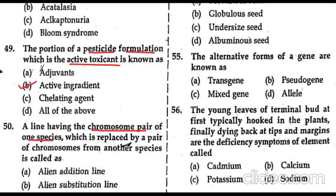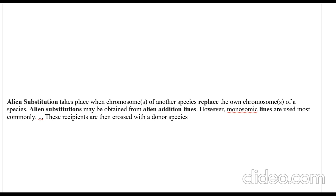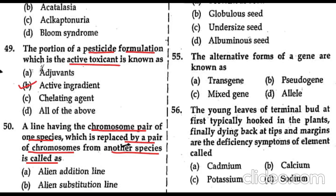Question 50: a line in which the chromosome pair of one species is replaced by a chromosome pair from another species is known as alien substitution. Alien addition occurs when a chromosome is added; alien substitution is when a chromosome of another species replaces the organism's own chromosome. The answer is option B: alien substitution.